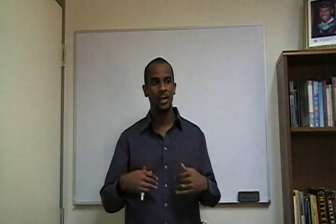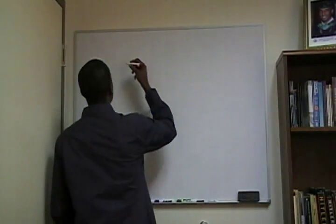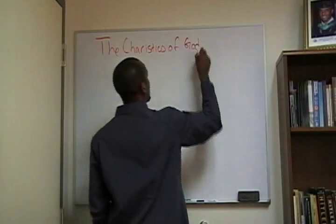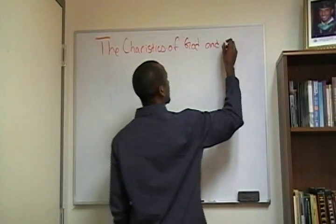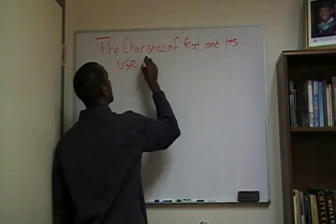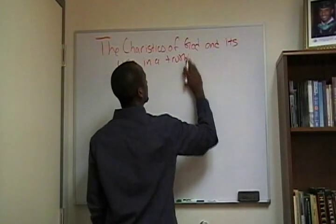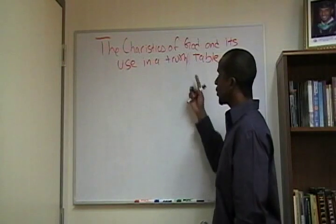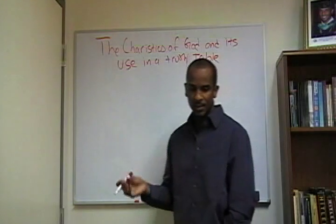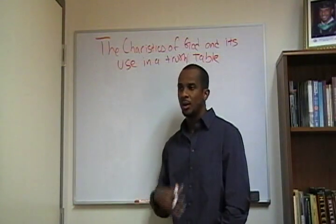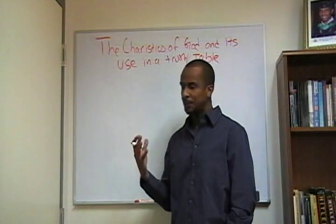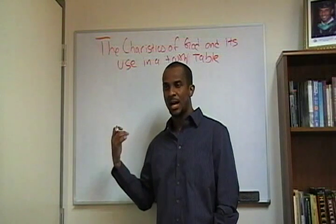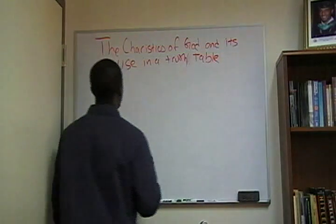So what am I going to do in this lecture? I'm going to discuss the characteristics of God and their use in a truth table. We're going to define these characteristics — and this is a millennia-old argument. The characteristics I'll list are not exhaustive; there are definitely more attributes God is said to have, but the three main ones are what we'll focus on.